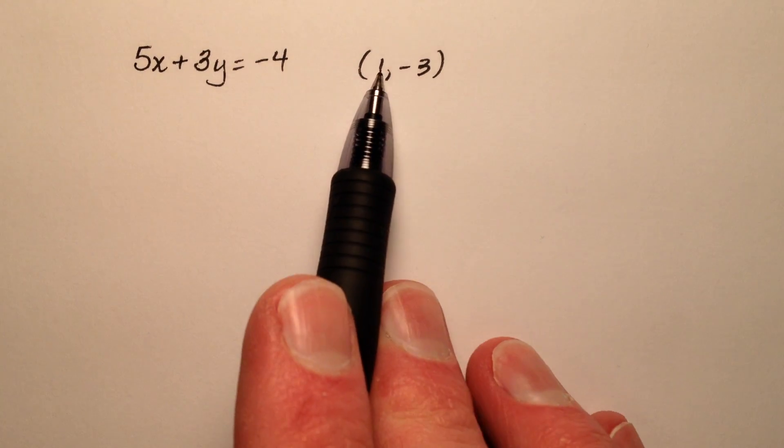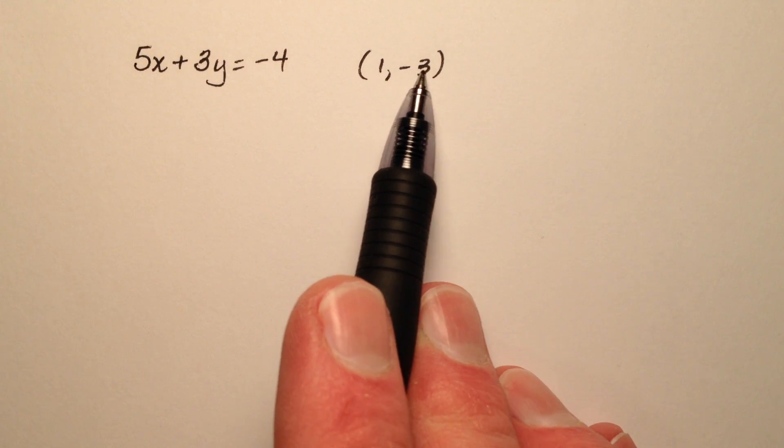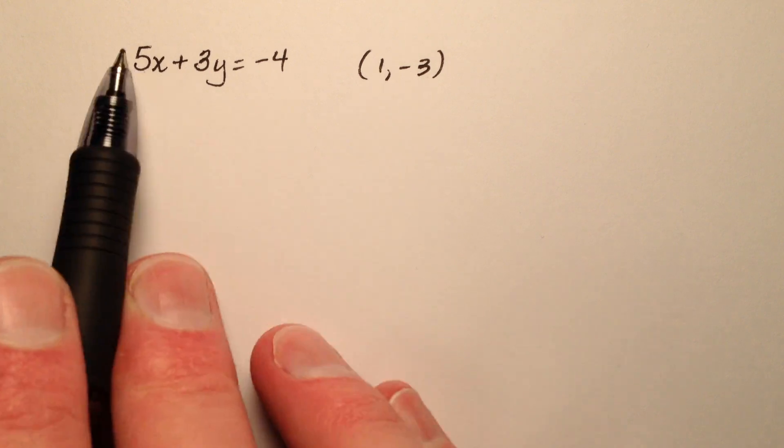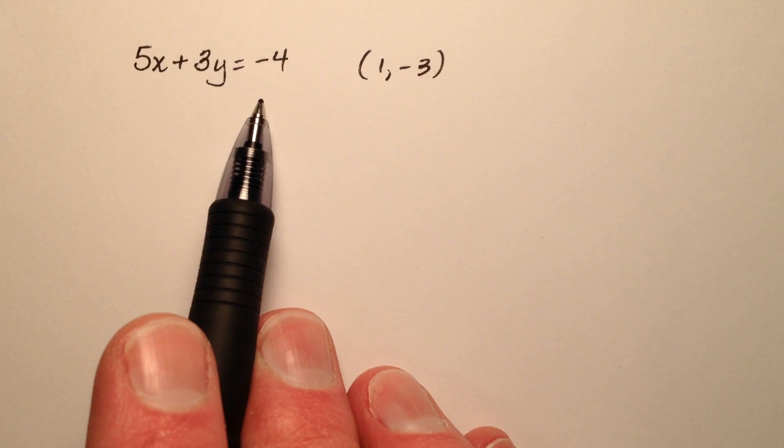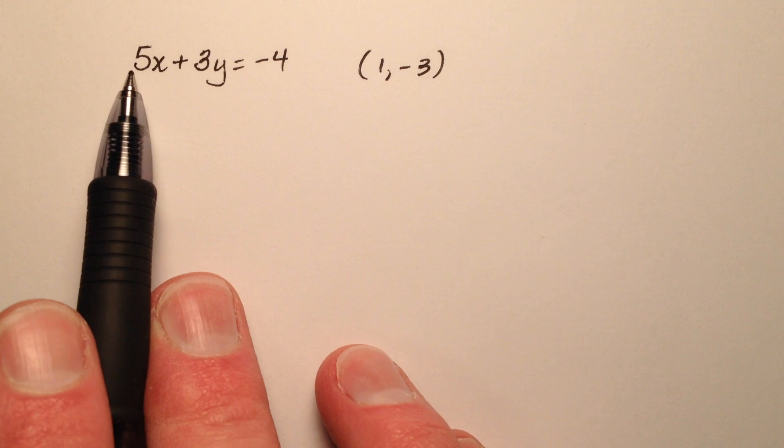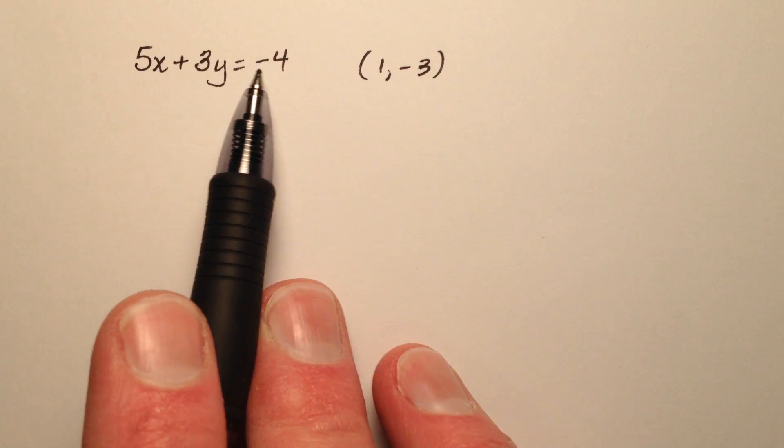Here, we're going to determine whether or not the ordered pair (1, -3) is going to be a solution of this linear equation in two variables, 5x plus 3y equals negative 4.